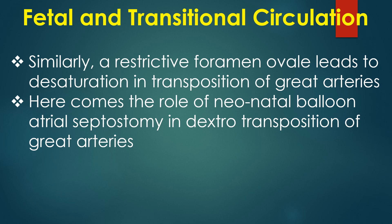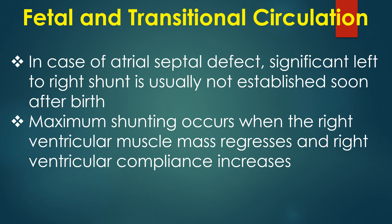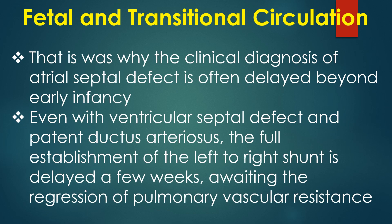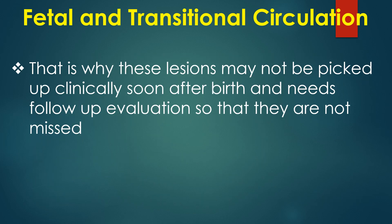Maintaining ductal patency with prostaglandin infusion or ductal stenting is often resorted to as a bailout procedure in cyanotic CHD with reduced pulmonary blood flow, and similarly for ductus-dependent systemic circulation. Neonatal balloon atrial septostomy plays a role in dextro-transposition of great arteries. In atrial septal defect, significant left-to-right shunt is usually not established soon after birth; maximum shunting occurs when right ventricular mass regresses and compliance increases — which is why clinical diagnosis of ASD is often delayed beyond early infancy. Similarly, VSD and PDA may not be picked up soon after birth and need follow-up evaluation.